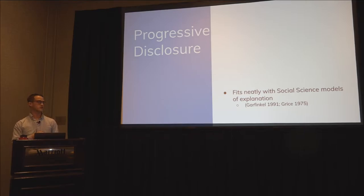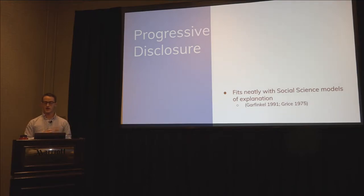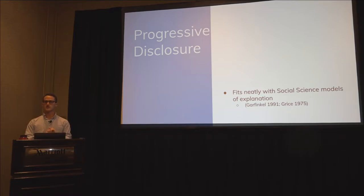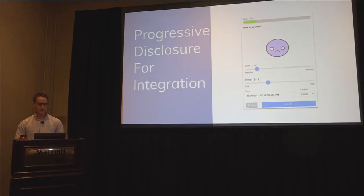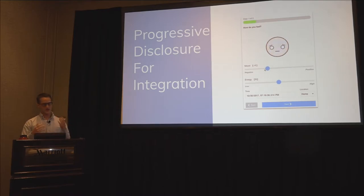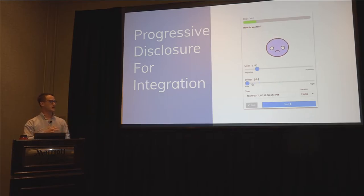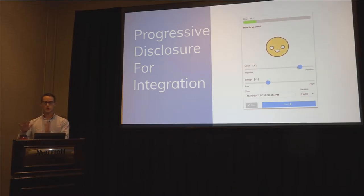This approach meets users where they're at — if they're invested enough to keep clicking through, they're invested enough to engage with the explanation. It also fits nicely within social science models of explanation. Garfinkel would argue explanations are occasioned — not needed all the time. Grice would argue you only need to provide as much information as is needed, no more, no less. Progressive disclosure meets these criteria. The idea is to pull the E-meter's emotional writing component back into the original application, applying progressive disclosure to transparency without negative effects on adherence or compliance.